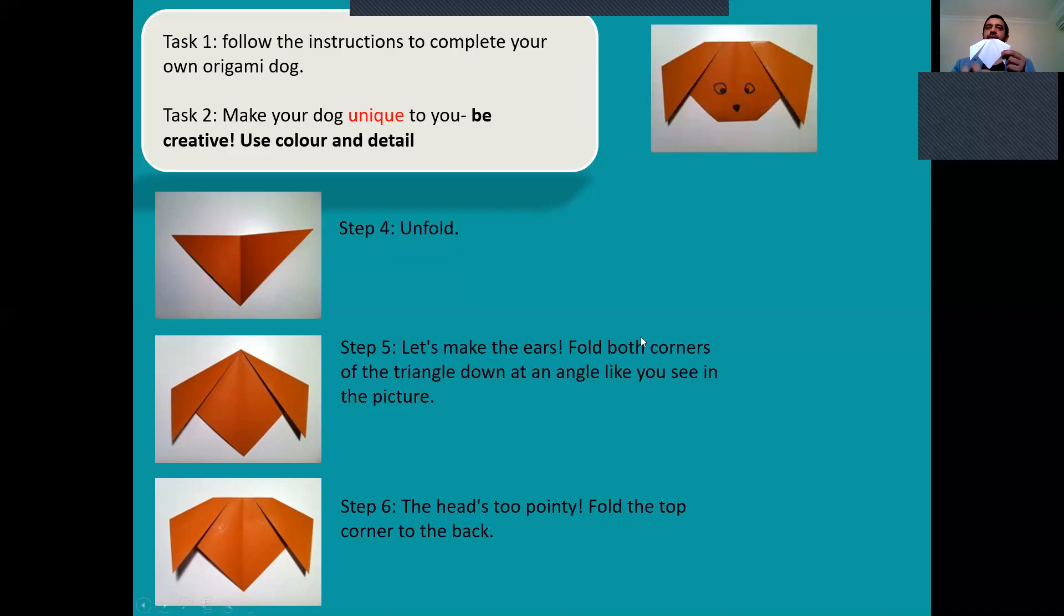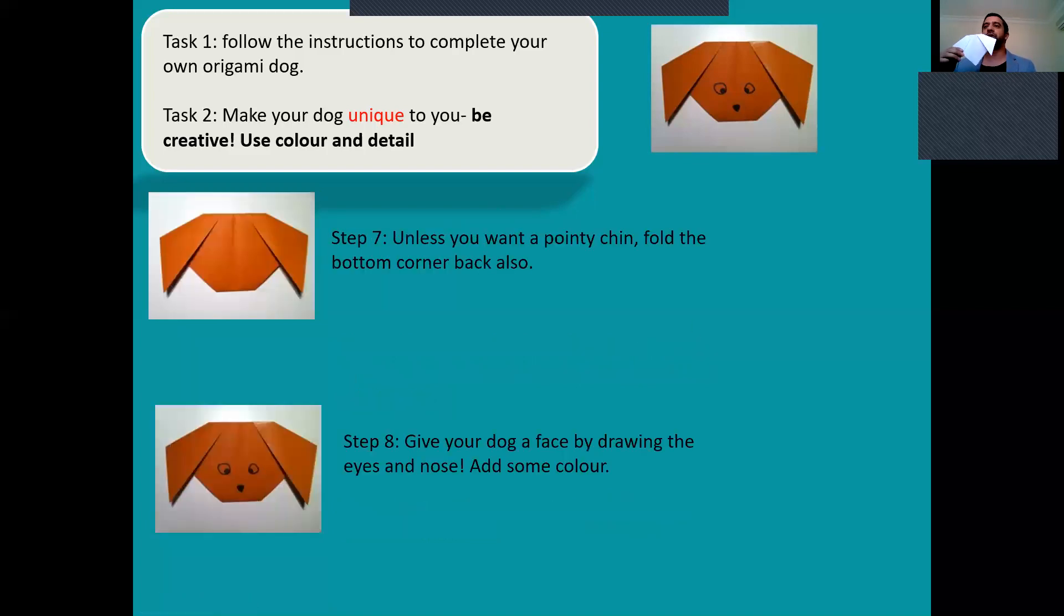Let's move on to step seven. Step seven says unless you want a pointy chin, fold the bottom corner back, so I'm going to fold this bottom corner back also. I'll flatten the top out by folding it to the back and I have something very similar to step seven.